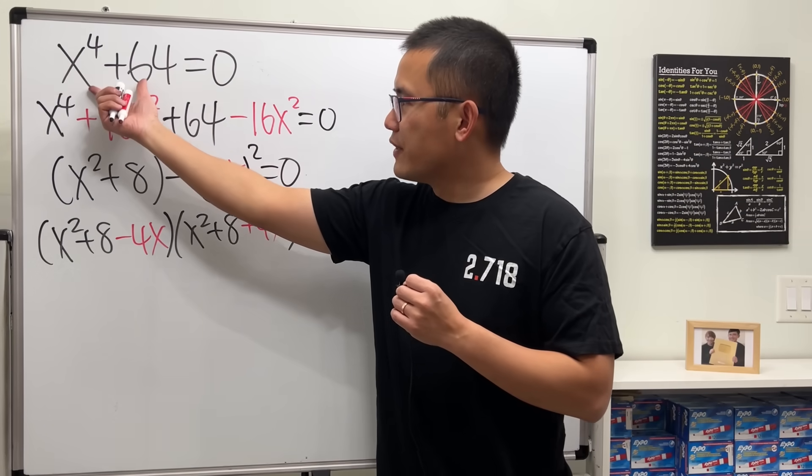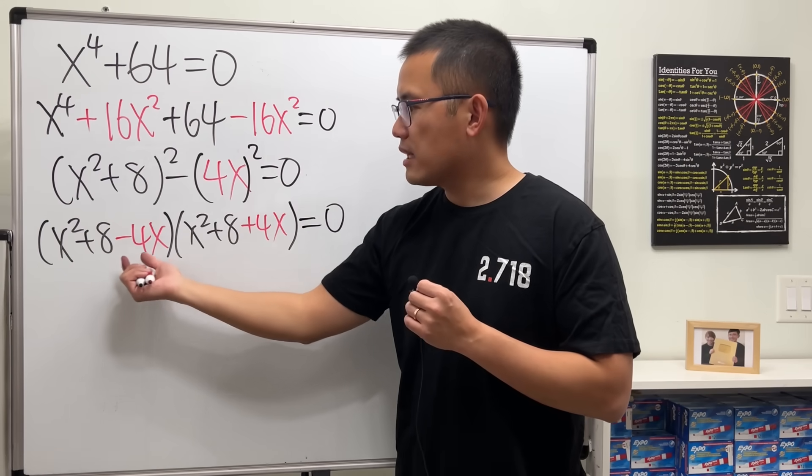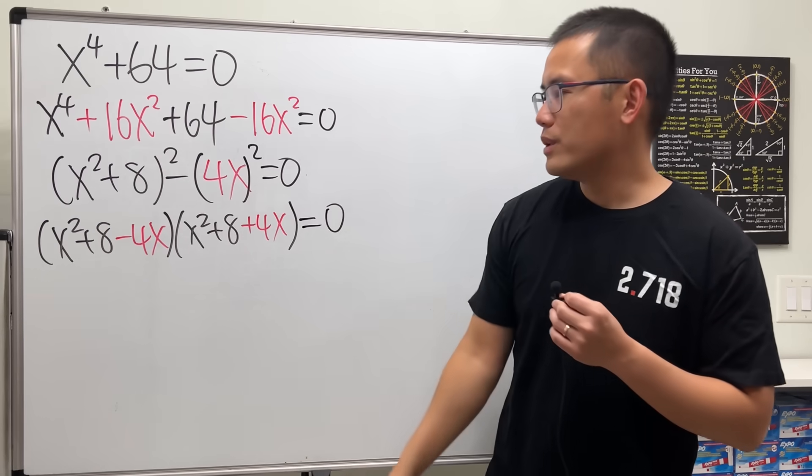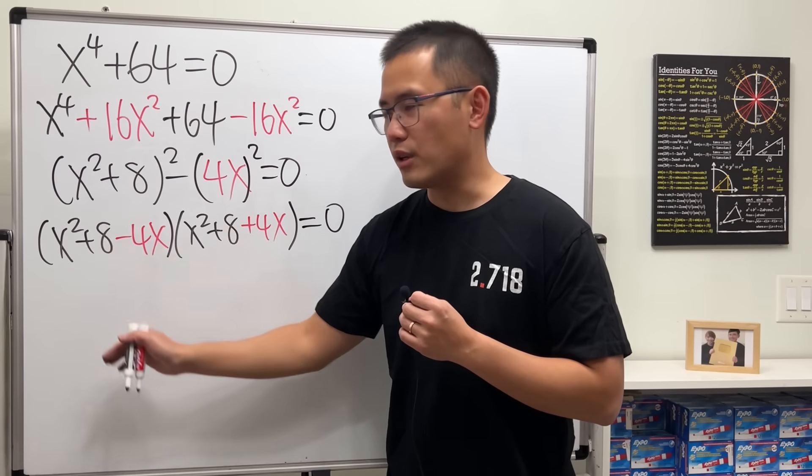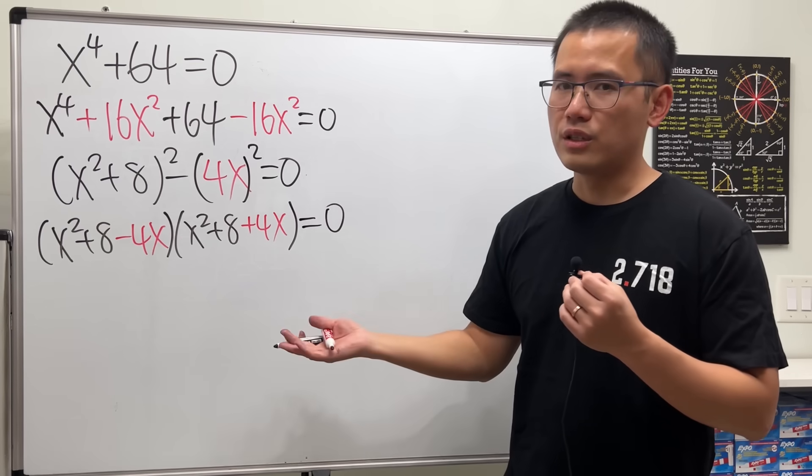Now, we have successfully factored this as a product of 2 quadratics. Then, we just have to make this equal to 0 and solve it. And then, make that equal to 0 and solve it. And that'll be it.